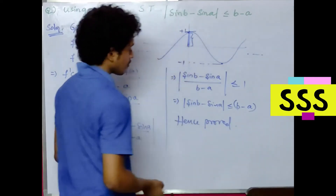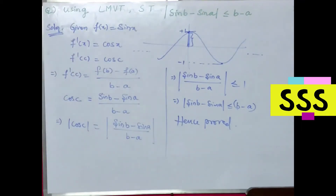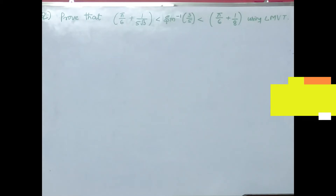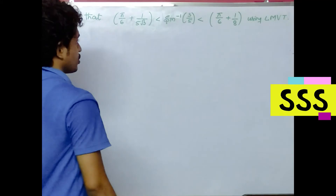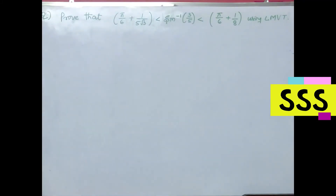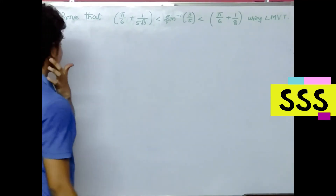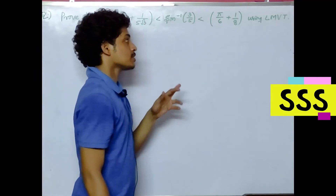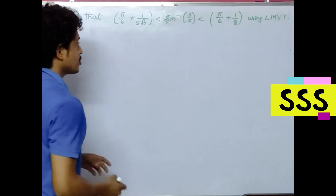Hence proved — such a beautiful, very logical question. Please note this. Let us see the next question. Now let us solve this particular very, very important and logical question: prove that π/6 + 1/(5√3) < sin⁻¹(3/5) < π/6 + 1/8, using Lagrange's Mean Value theorem.